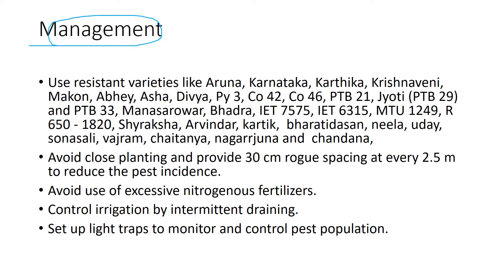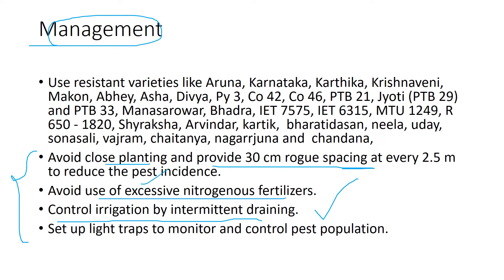Now for management of BPH: control irrigation by intermittent draining. Be precautious while irrigating the crop and avoid use of excessive nitrogenous fertilizer. Avoid close planting and provide 30 cm row spacing between each plant to control infestation. Also set up light traps to monitor and control pest population — all pests are mostly attracted to light sources, so light traps can effectively control the pest population.